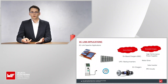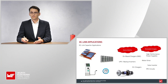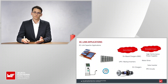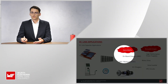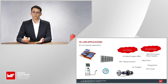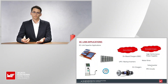Let's talk about some general DC-Link capacitor applications. In electric mobility, you can find them in onboard chargers or EV chargers. For renewable energies, you can find them in solar inverters or other inverters connected to renewable energy sources. You can also find them generally in higher power applications.